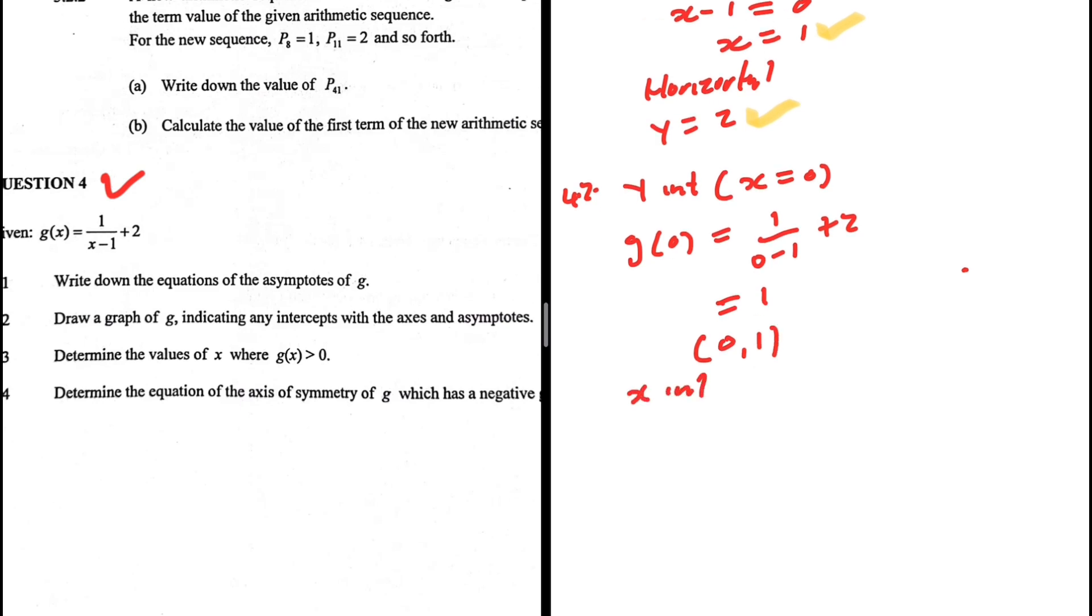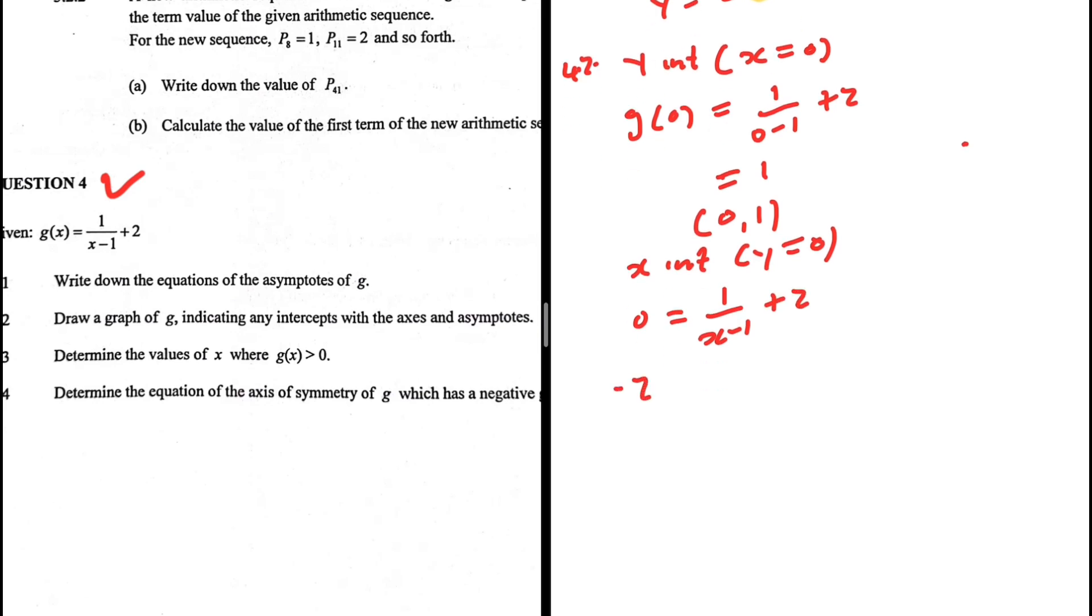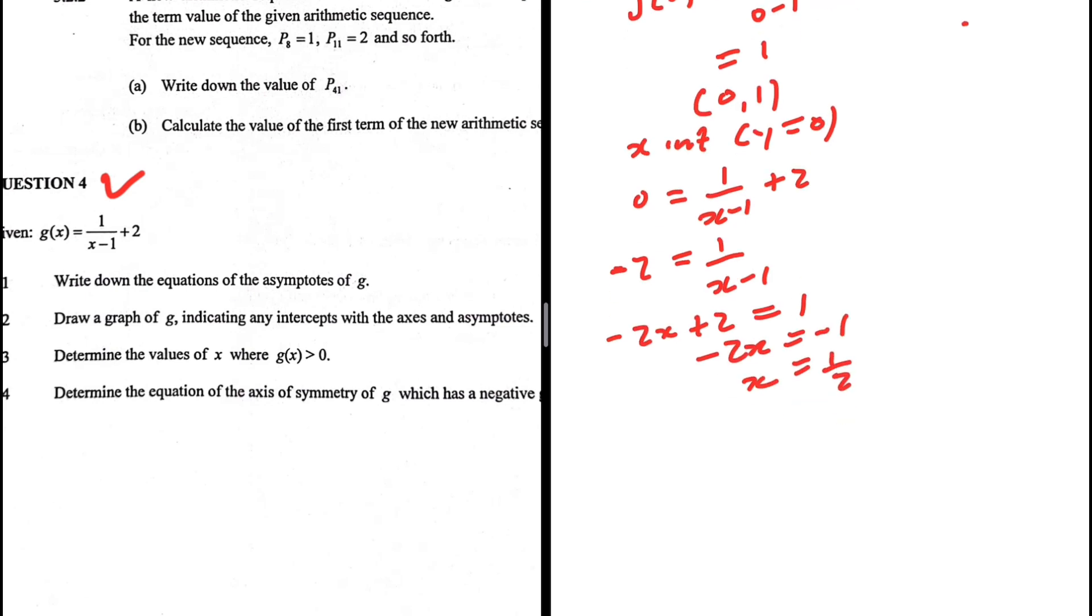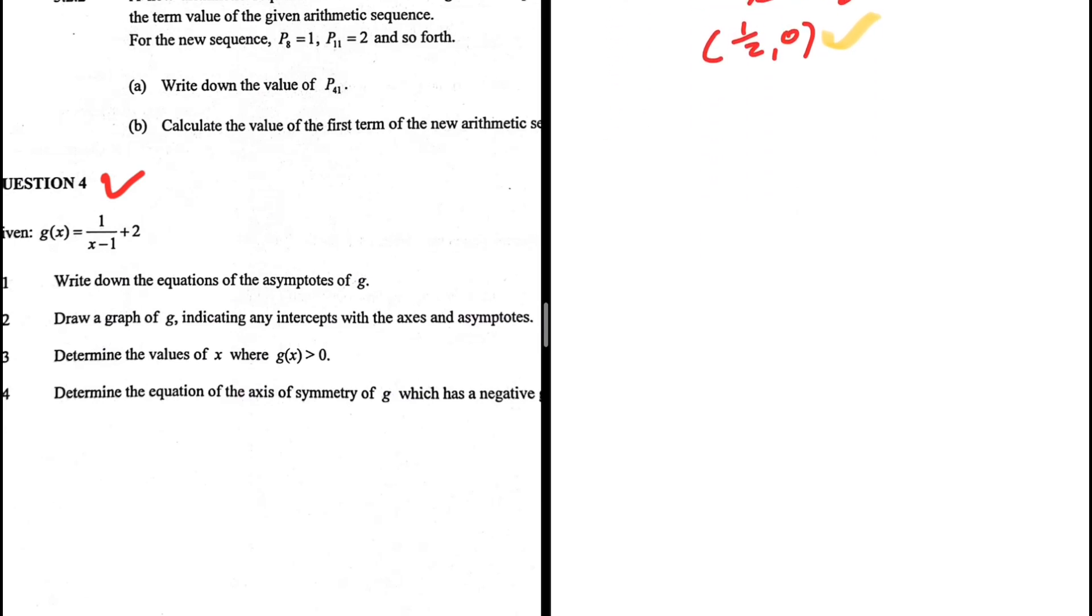Let's move to the x intercept where now y is equals to 0. So we get 0 is equals to 1 divided by x minus 1 plus 2. We take 2 to the left hand side, minus 2 is equals to 1 divided by x minus 1. If we cross multiply, we're going to get minus 2x plus 2 is equals to 1. So minus 2x is equals to 1 minus 2 which is minus 1. So x is equals to 1 half. Our x intercept, x is 1 half and obviously y is 0. So we have our intercepts and our asymptotes. We can go ahead and sketch this graph.